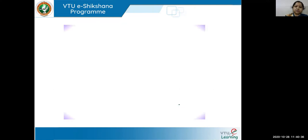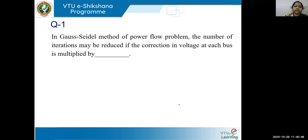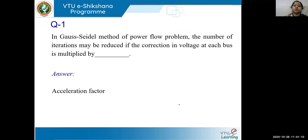We have a quiz. Question one: In the Gauss-Seidel method of power flow, the number of iterations may be reduced if the correction in voltage at each bus is multiplied by what? The answer is the acceleration factor alpha. If you accelerate your voltages at every bus in each iteration, you will definitely reach convergence faster.